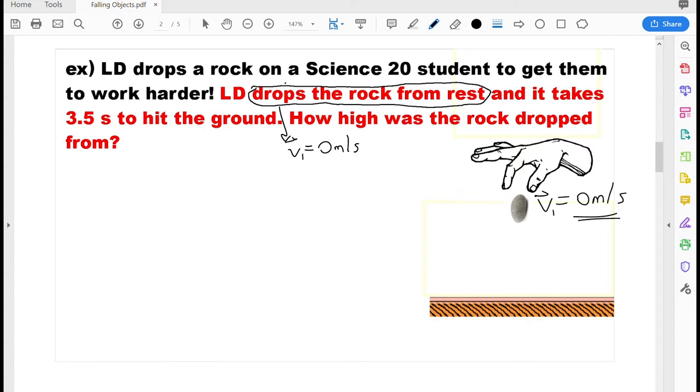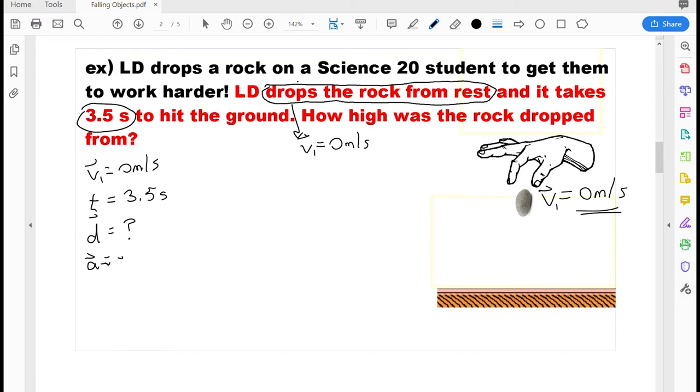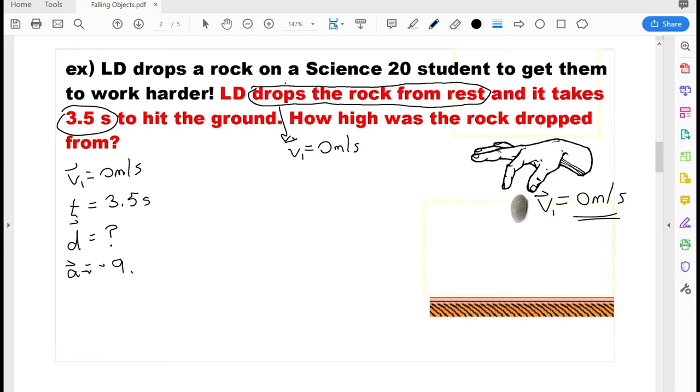So that's the first variable I have in this question. The next variable I have is the time. It says it takes 3.5 seconds to drop. So I'm going to make a little variables list. I have initial velocity of 0 meters per second because it was dropped. I have a time of 3.5 seconds. They want to know how high was the rock dropped from. So that variable, how high something was dropped from, is displacement. And that's what I'm going to solve for. And the other variable we have here is the acceleration.